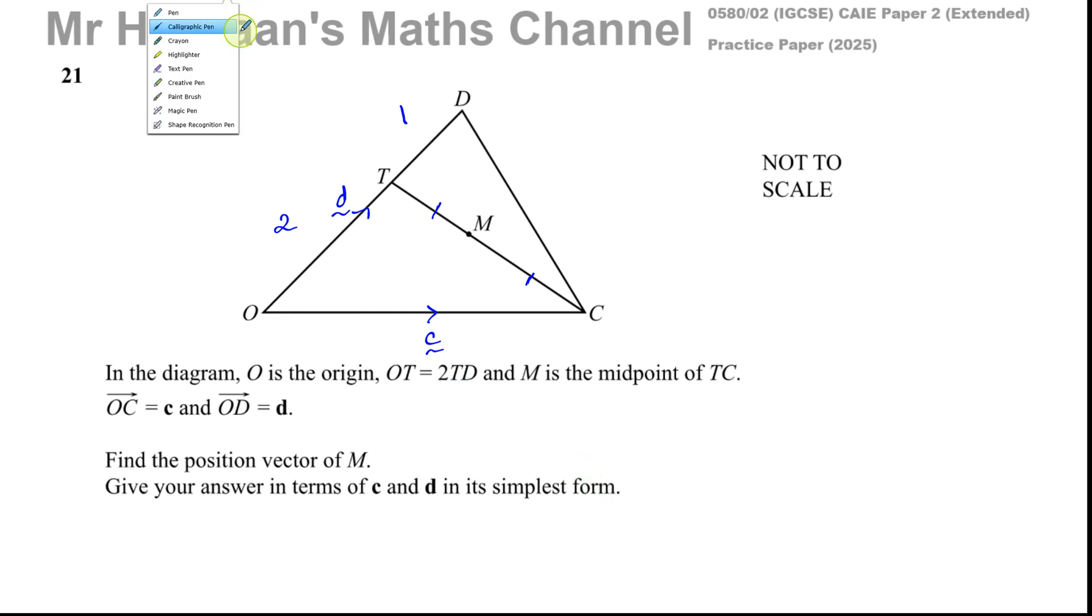Find the position vector of M. So the position vector of M. The word position vector is very important and what it means is from O to M. So whenever you see the word position vector in a question, there will always be an O somewhere in the question. The position vector from O to M, position vector of M means find the vector from O to M.